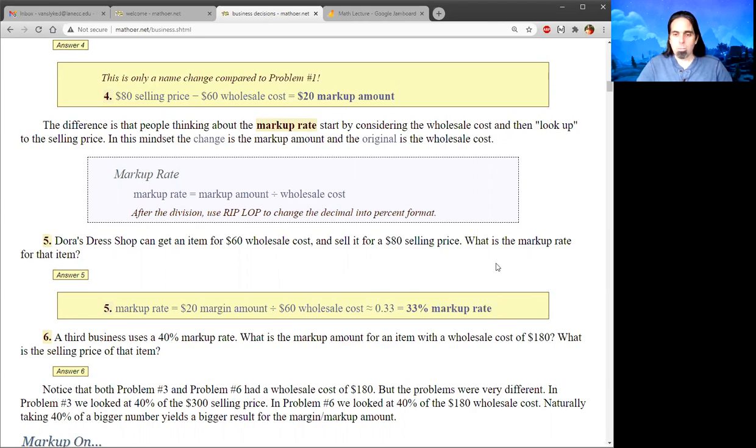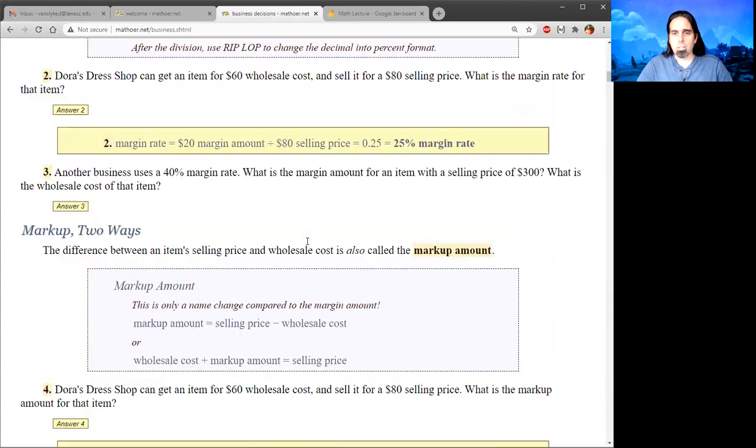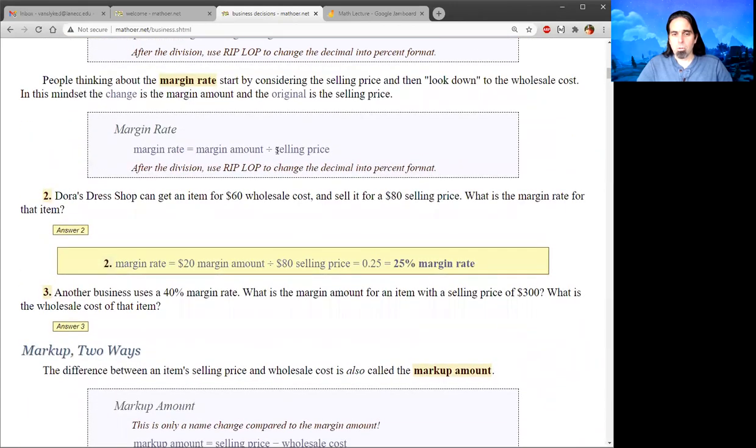At this point, you're probably slightly confused and you just have to trust that it's like riding a bicycle and you do some homework and you get used to the funky vocabulary. But markup looks up. The original is the smaller number and you look up from there. Margin looks down. You start with the higher number, the selling price, and look down from there.